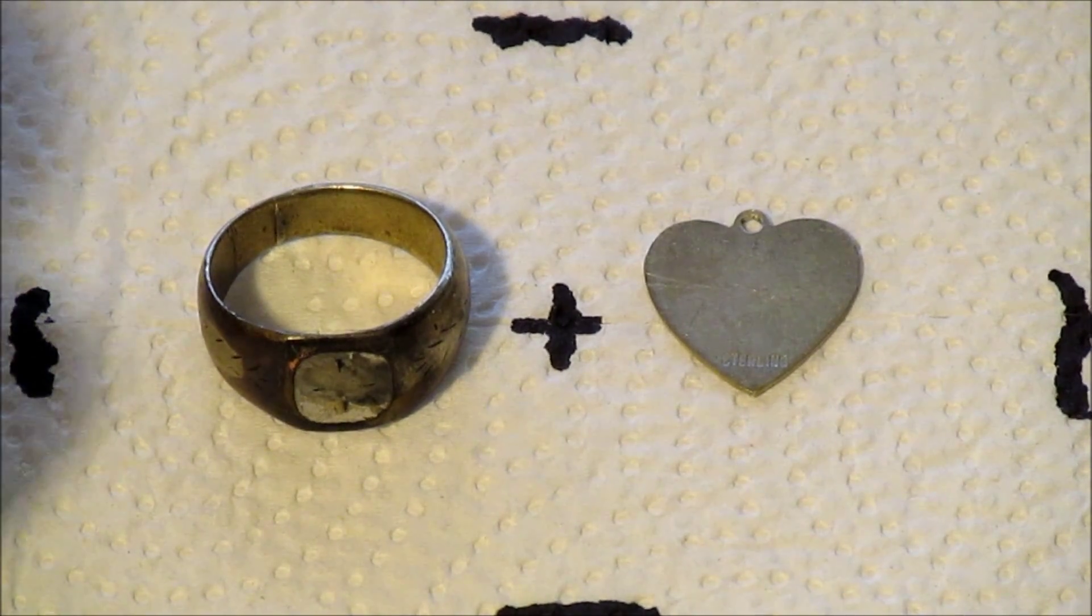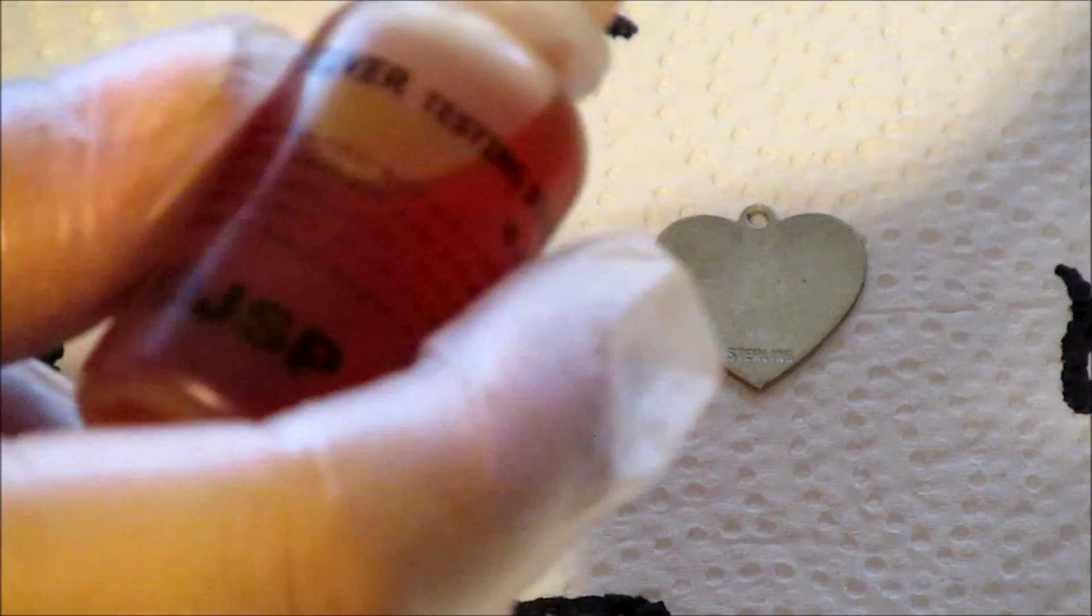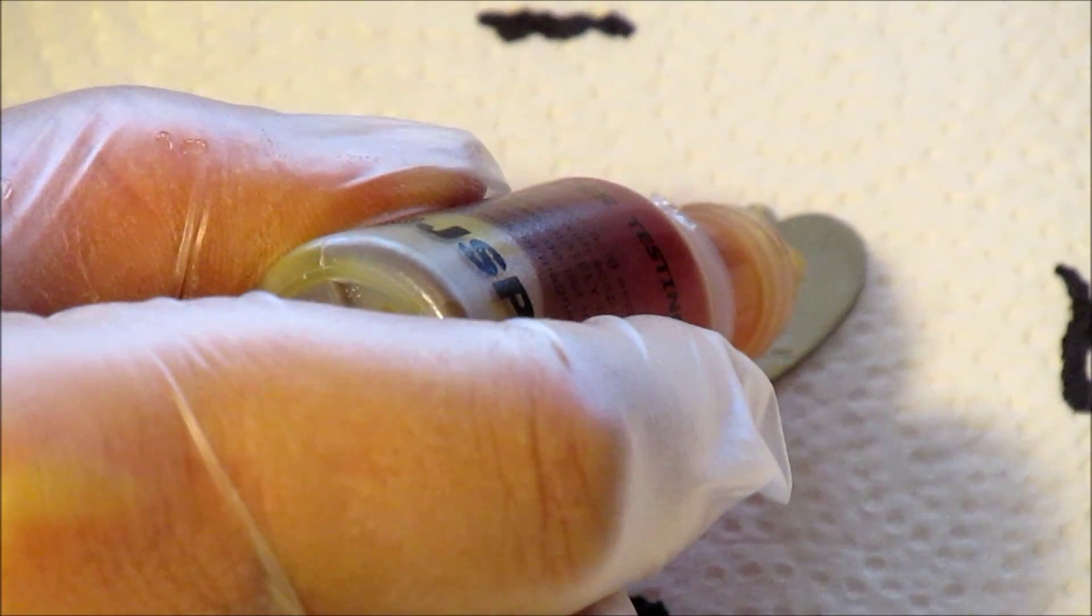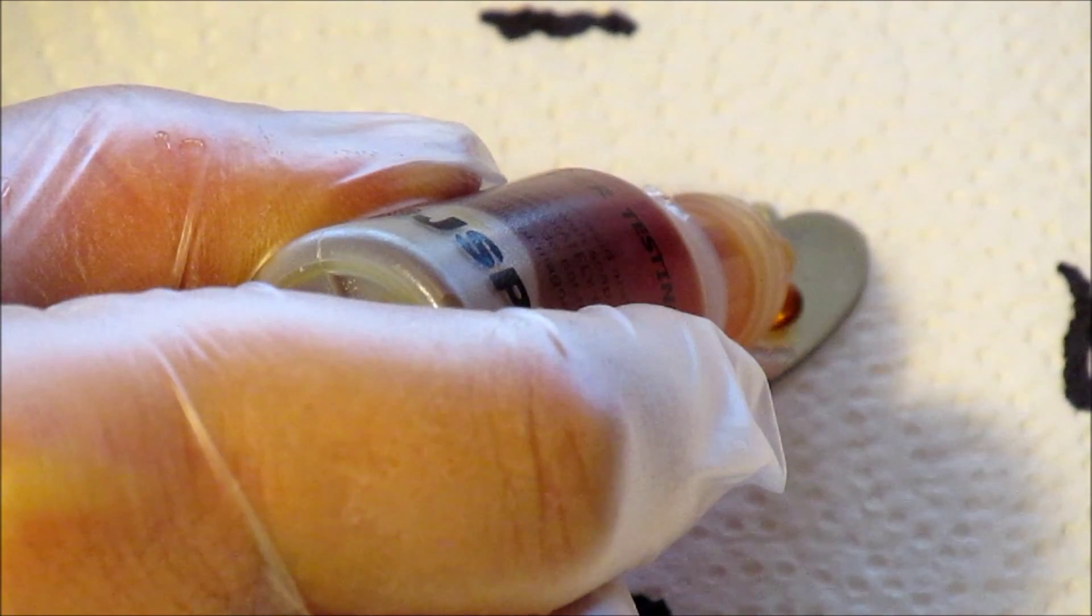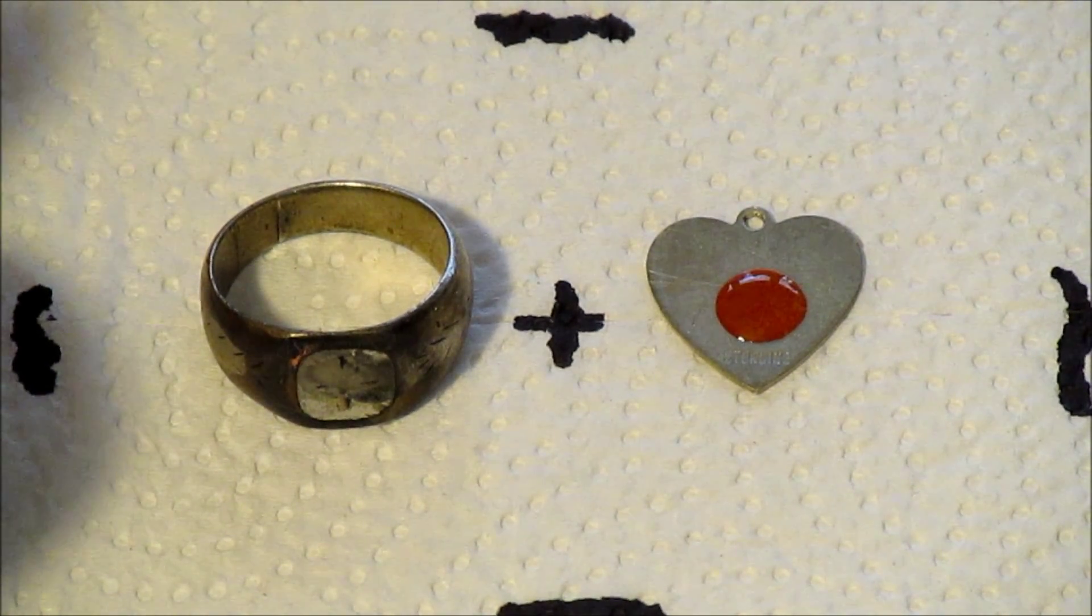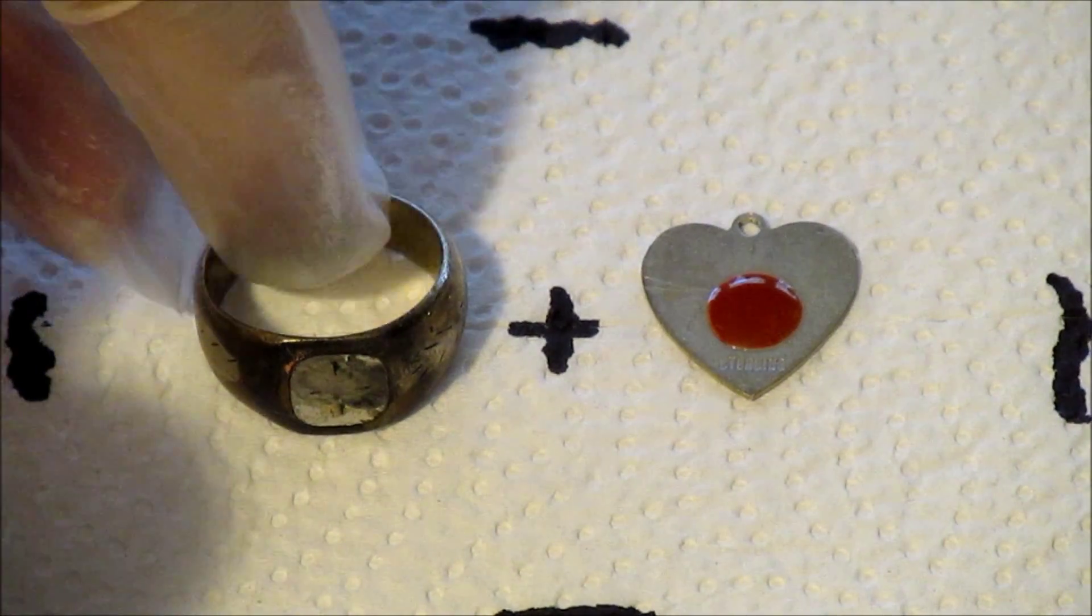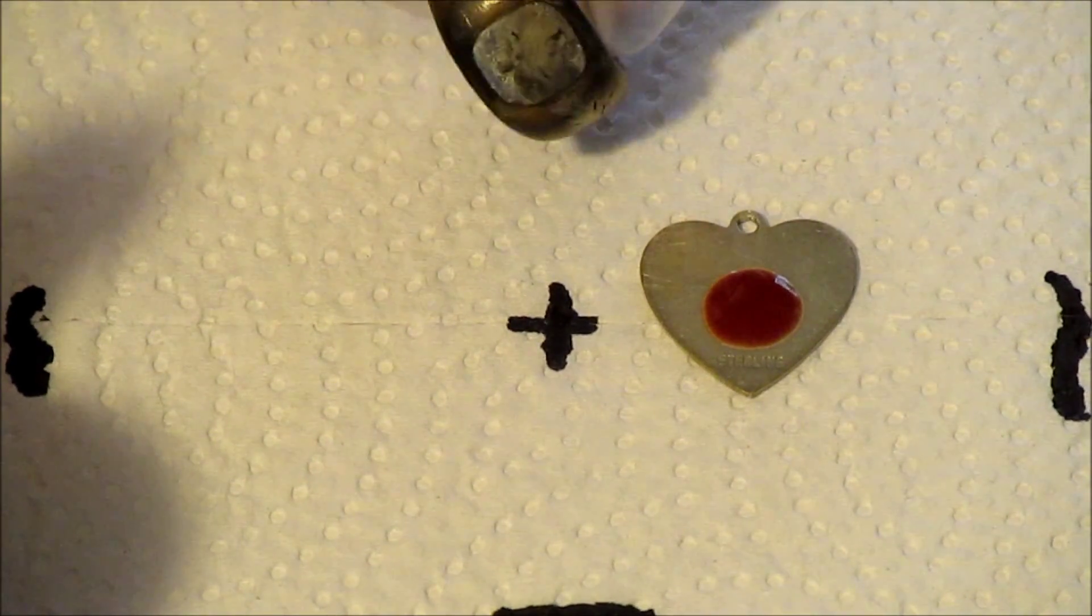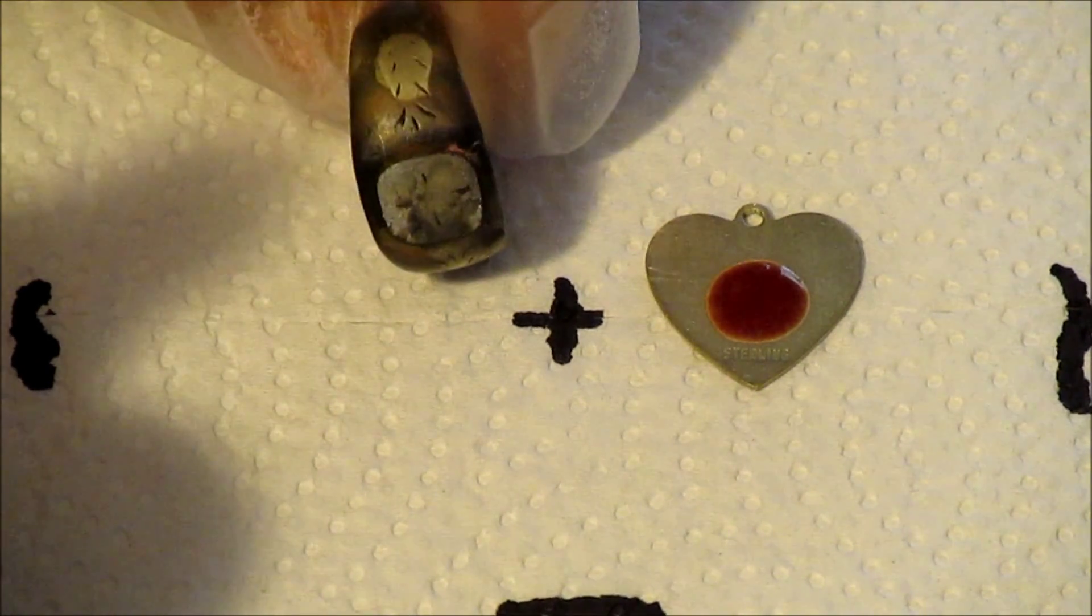So I'm going to put a dot on this, a little drop, and the solution will react with the silver and should turn very red. And that proves that there's silver in it. Now this ring is not marked—we're going to put a drop on it. If there's silver in it, it'll turn red.